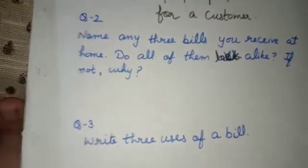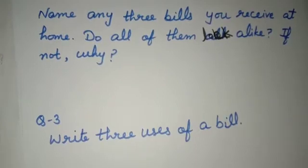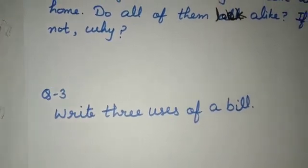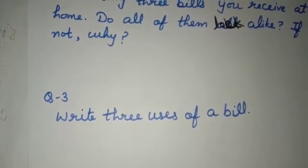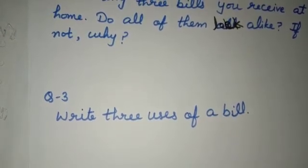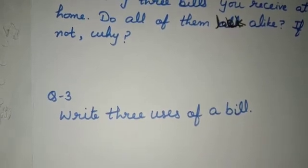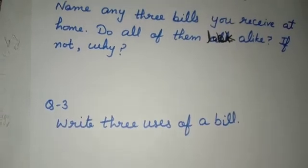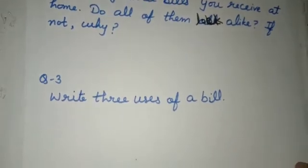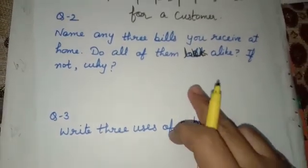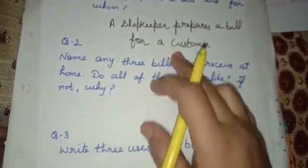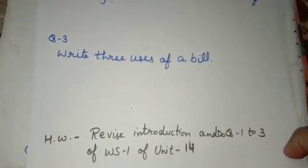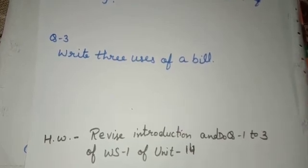Question number three: write three uses of a bill. We have just discussed them: a shopkeeper can keep a track on day-to-day sales; the customer can cross-check the prices of items purchased and their total cost; and in case of any problem, the customer can exchange the items easily by showing the bill. These three uses are at page number 169 of our book. Your homework is to revise the introduction and do questions one, two, and three of worksheet one of unit 14. Thank you.